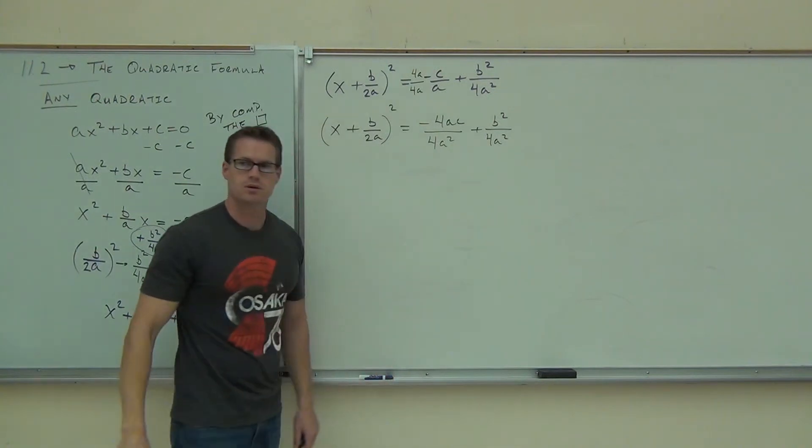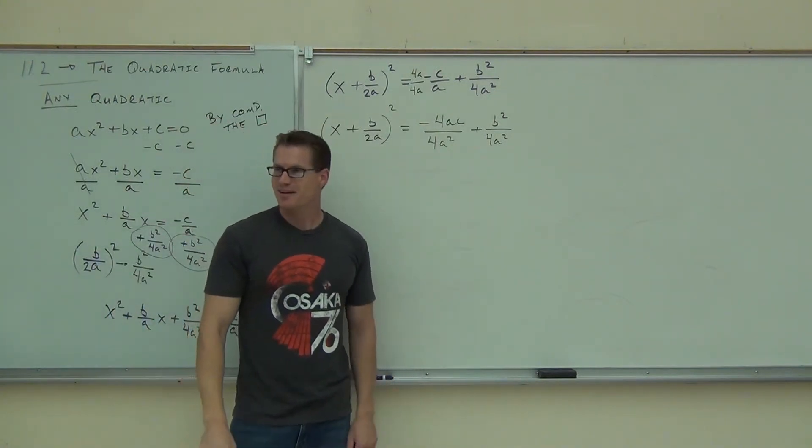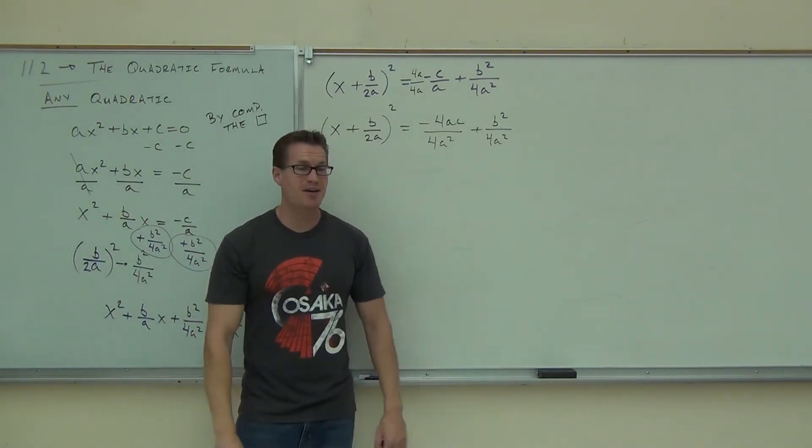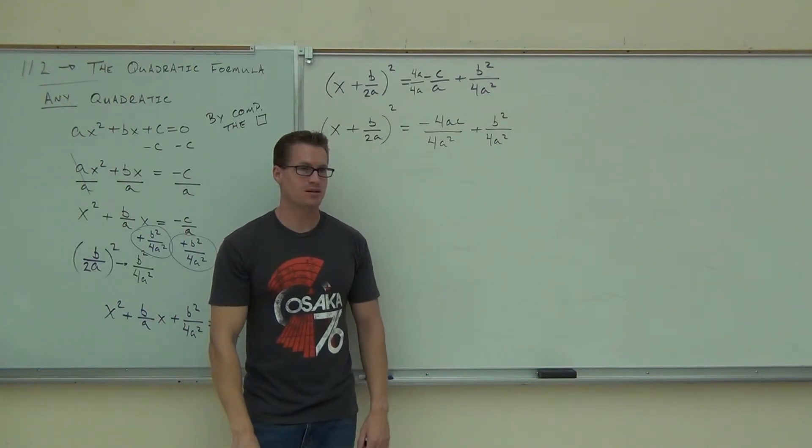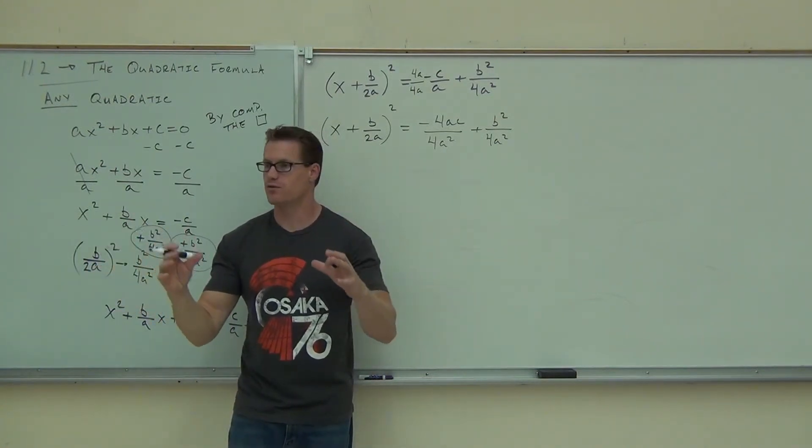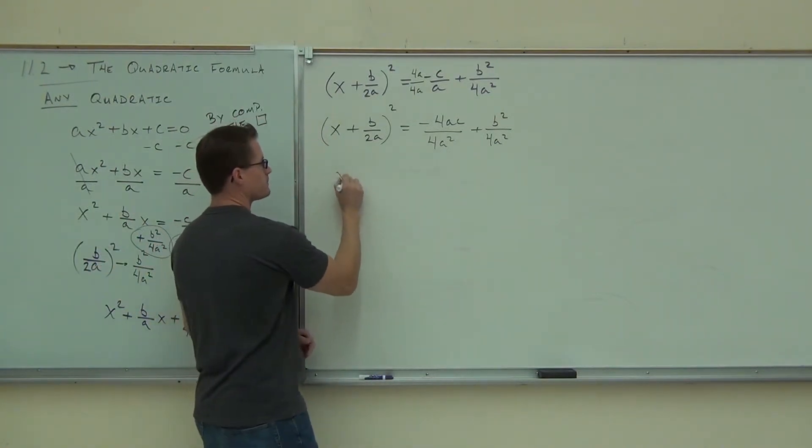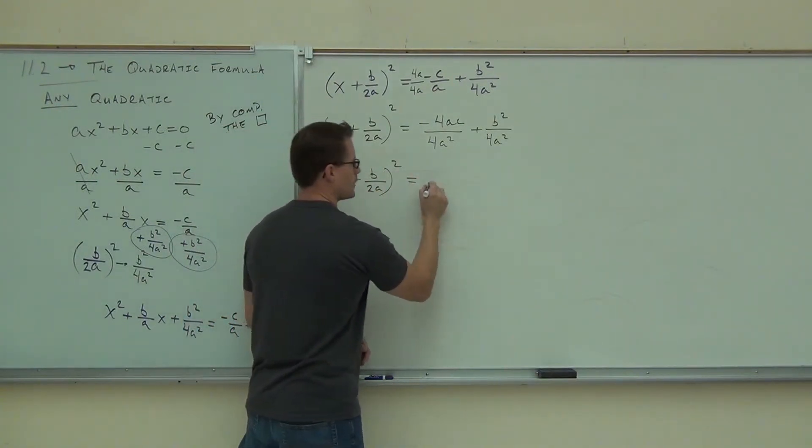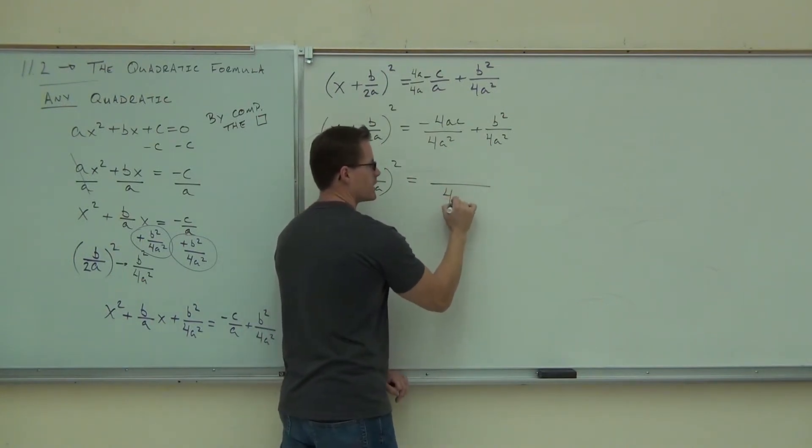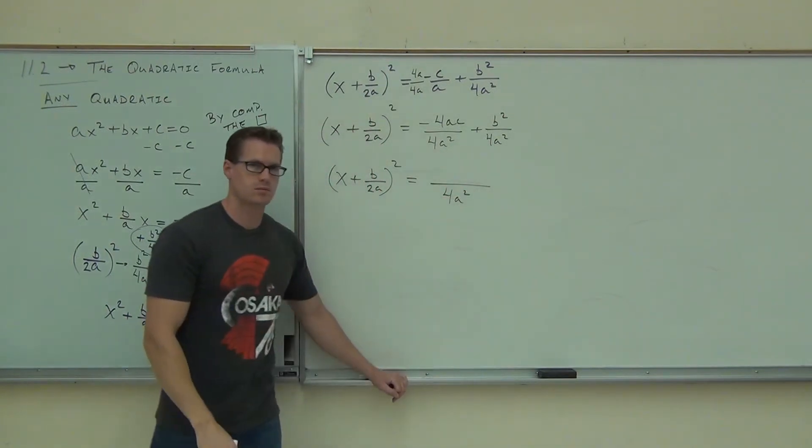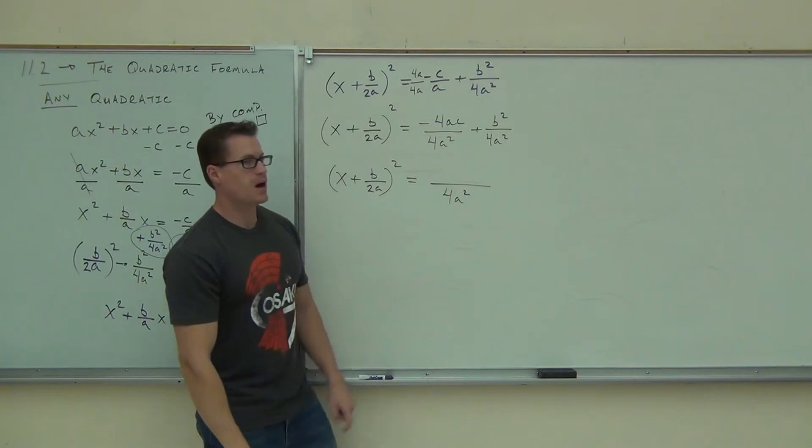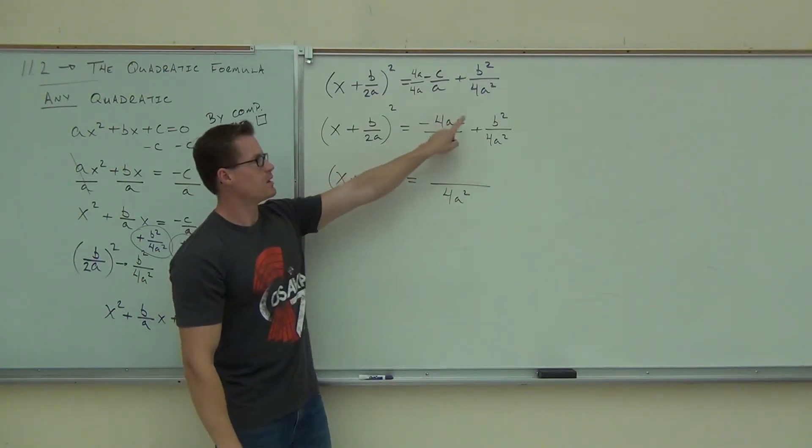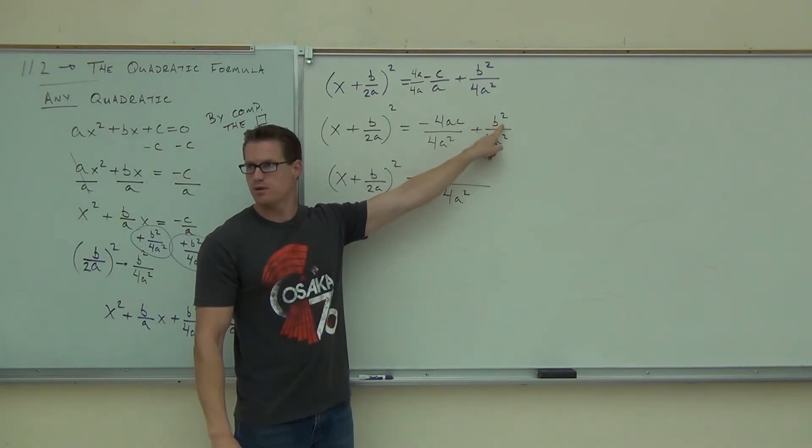Left-hand side, I'm going to keep that the same for just a while. Right-hand side, I get, notice, I still have a negative. I've got negative 4ac. Do you see where the negative 4ac is coming from? All over 4a squared plus b squared over 4a squared. Am I successful? Do I have a common denominator is what I'm asking. Yes. I can make that into one fraction.